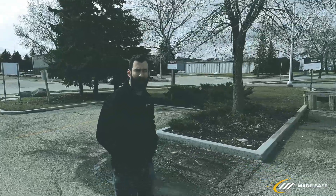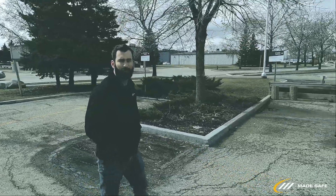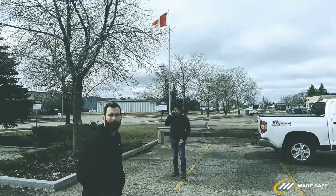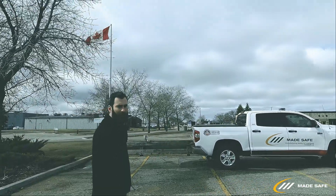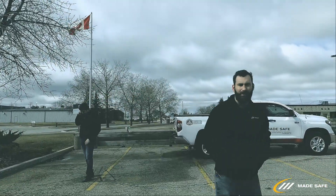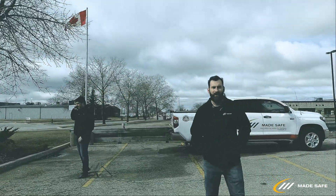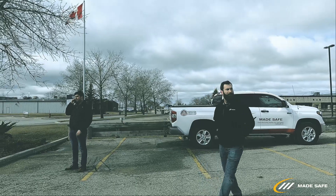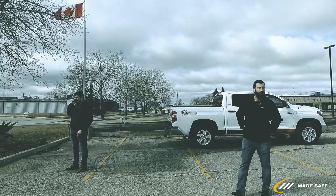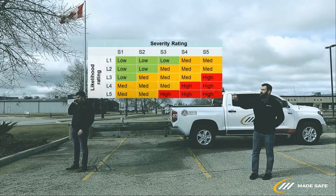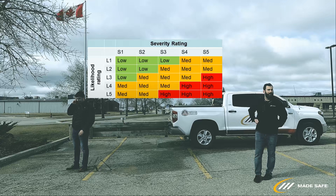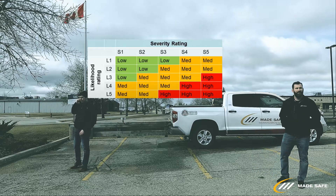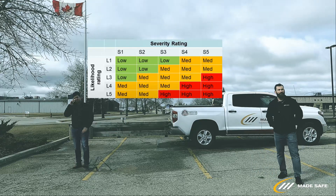For the example today, we have chosen a risk matrix that ranges from one to five for three different categories. This matrix is based on numbers rather than color codes. With one style of matrix, you could have green, yellow, and red colors to indicate a corresponding risk level.